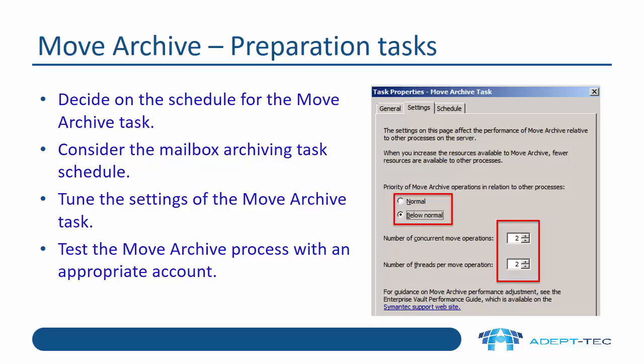We can also tune the settings of the move archive task. In the screenshot, you can see the properties of the move archive task, where we can set the priority of move archive operations. By default, it's set to below normal. We can also set the number of concurrent move operations and the number of threads per move operation. If we've got a lot of archives to move, we can increase these values.